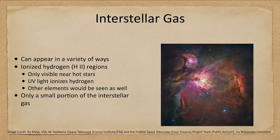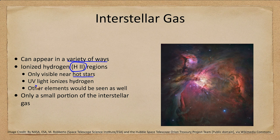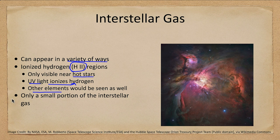Let's look at the interstellar gas first. The gas can appear in a variety of ways. We see what we call H II regions, or ionized hydrogen regions. These are only visible near hot stars. We see here the Orion Nebula — ultraviolet light from the hot stars ionizes the hydrogen and excites it, causing it to glow. When the hydrogen has been ionized, the electrons and protons recombine and give off very specific visible spectral lines. We would see other elements as well, but recall that most of the material we see is hydrogen gas.